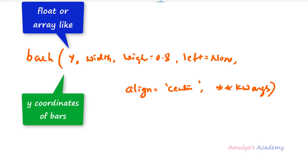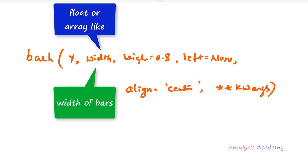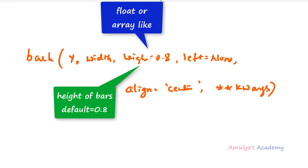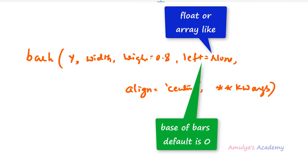The first parameter of barh is y — the y coordinates of the bars. You can have scalar or array-like values. Next is width — the width of the bars, also scalar or array-like. Then height, which is optional with a default value of 0.8 — the height of the bars. Next is left — the x coordinate of the left side of the bars, which is the base of the bars.